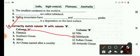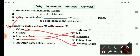Southern Ocean, another name for Southern Ocean is Antarctic Ocean. Africa, the river Nile flows through Africa and the last one, an ocean named after a country is Indian Ocean.